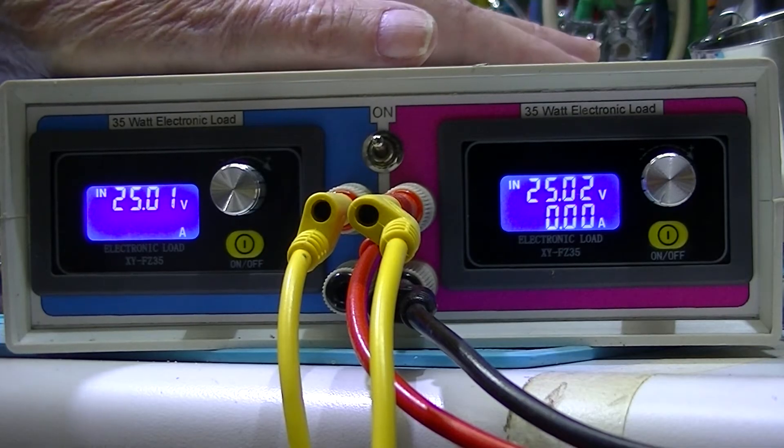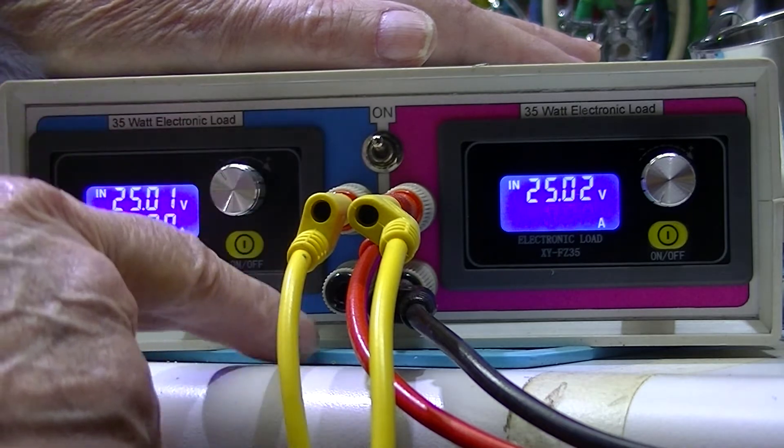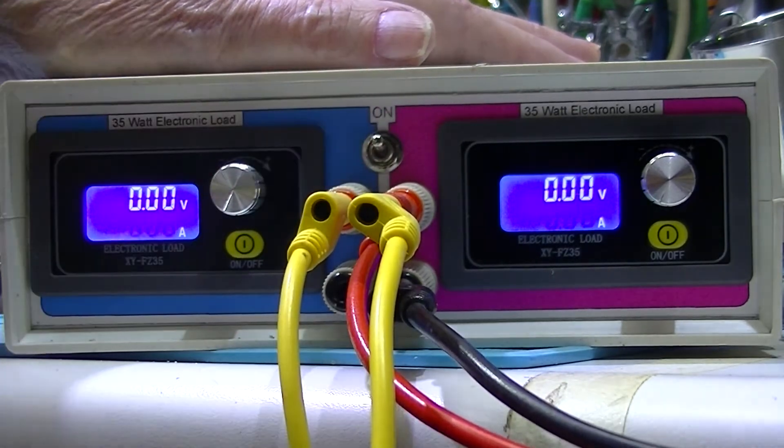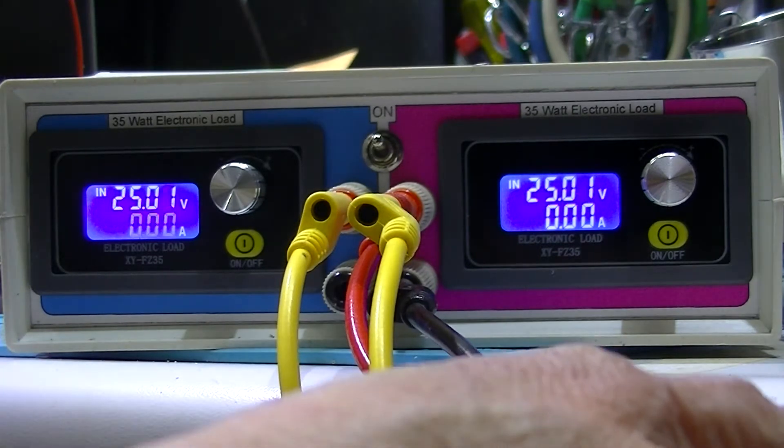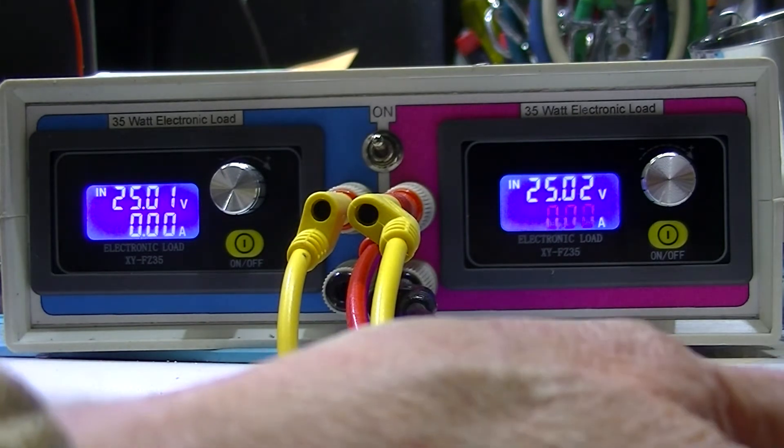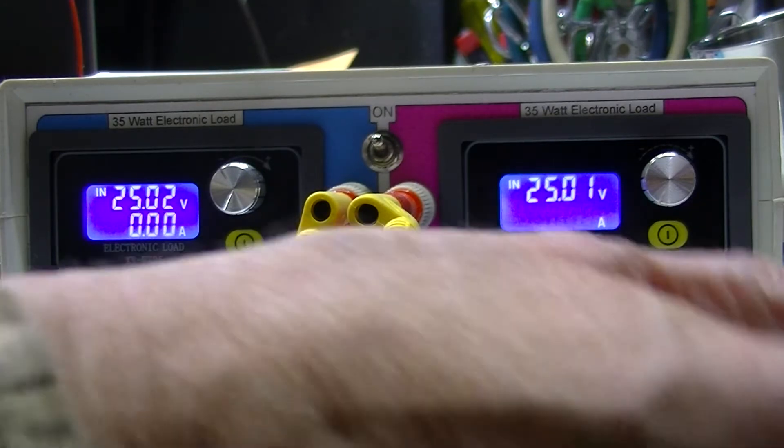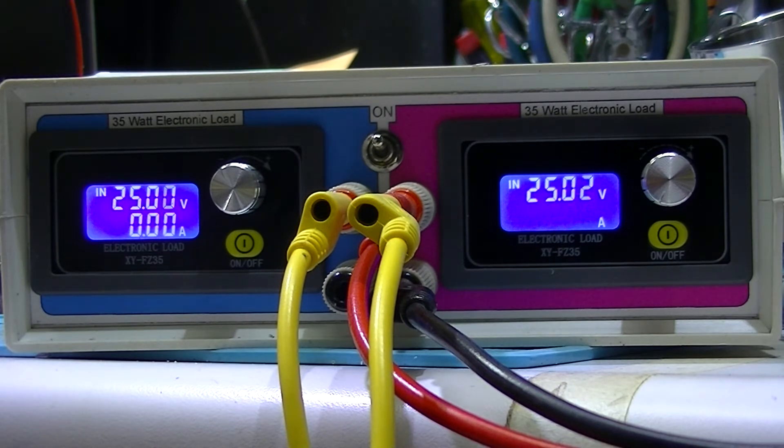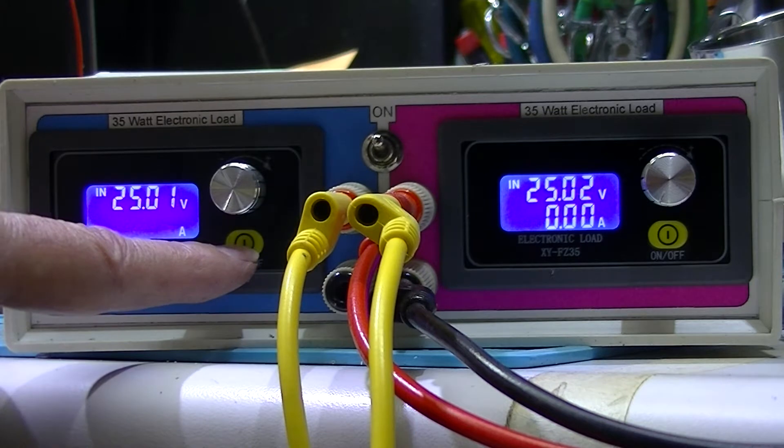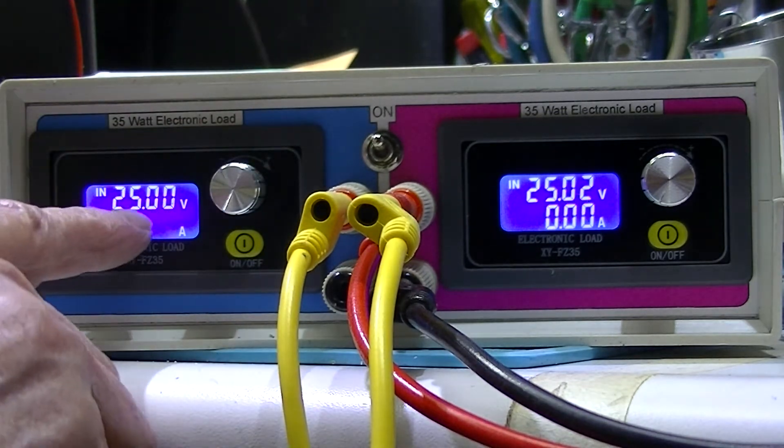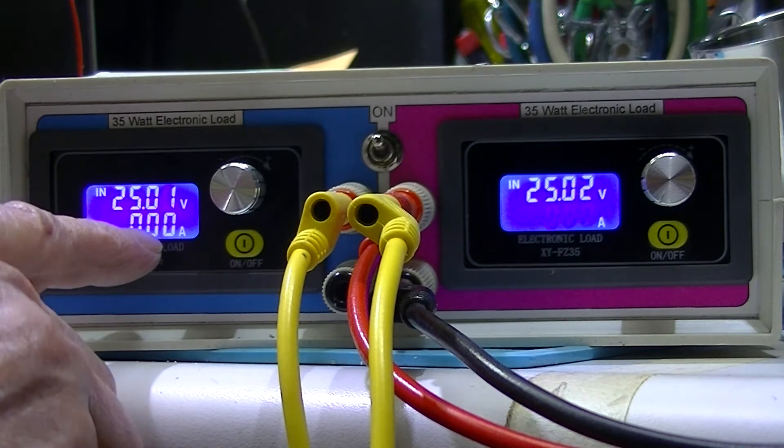Here's the electronic load, turned on. The red and black leads go to Hewlett-Packard 6268B, which I think is rated 40 volts at 30 amps. The loads are not turned on, they are electronically powered, and you can see I'm supplying 25 volts.